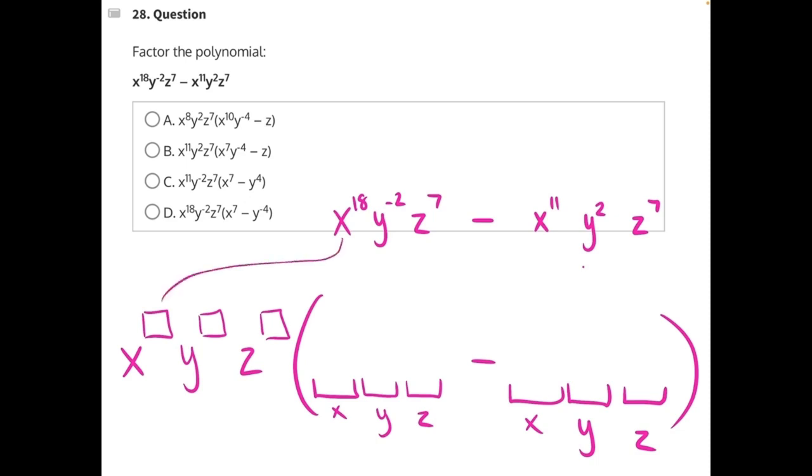A greatest common factor for our two x variables, a greatest common factor for our two y variables, and a greatest common factor for our two z variables. Each of these greatest common factors is going to have their own exponential power that we'll need to figure out. And then once we factor all of that out, we need to figure out what is left over inside the parentheses. And those two things combined will give us our final answer.